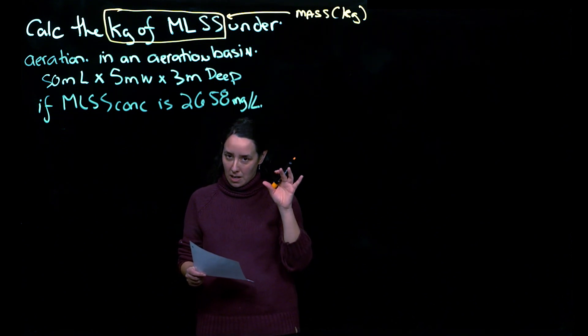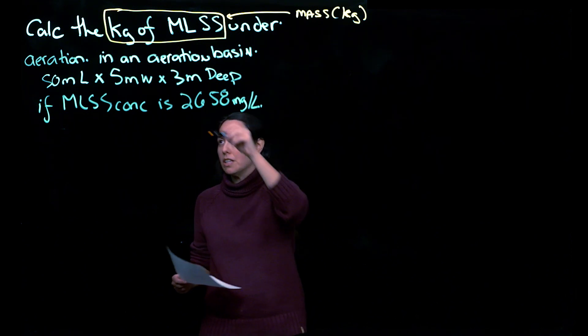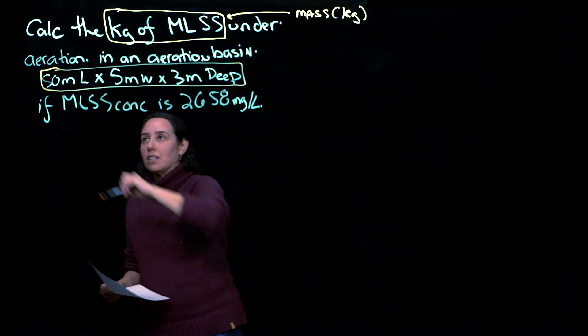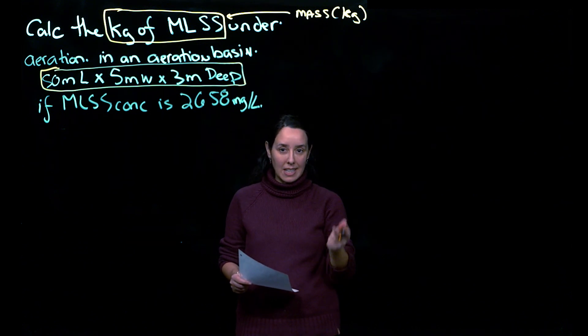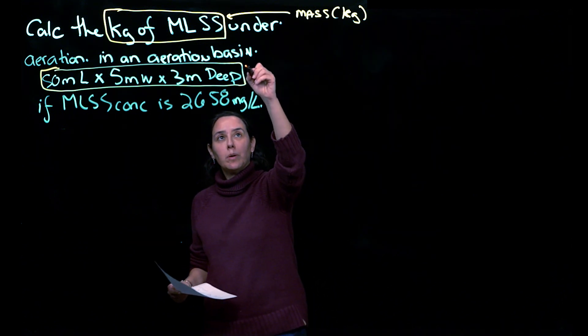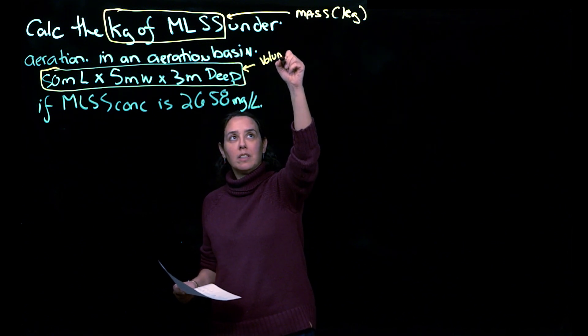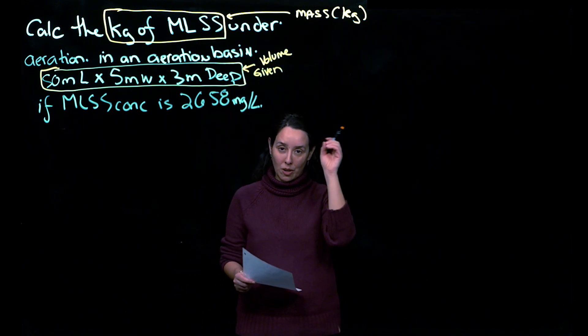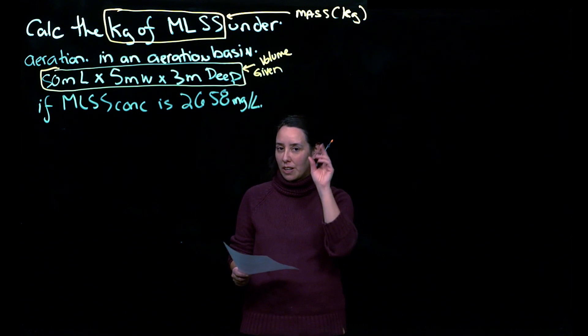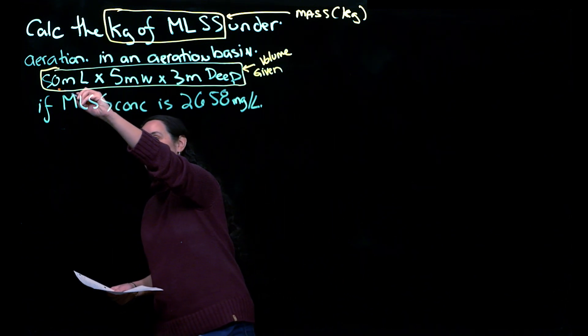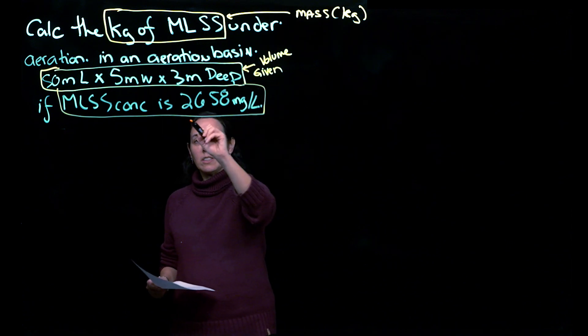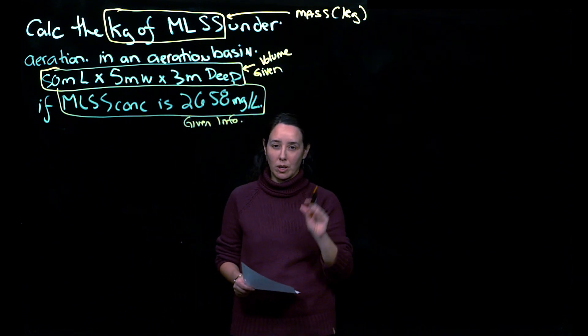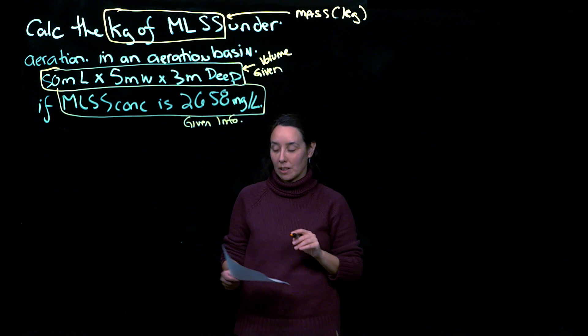And then I see that I'm given another piece of information, which is here. So when you see this kind of information, you've got a length, a width, a depth, that's going to tell you that you're most likely going to calculate a volume. And this is given, or at least the pieces of information are given to solve that volume. And then you've got another piece of information which is here, which I would just say given info for now.